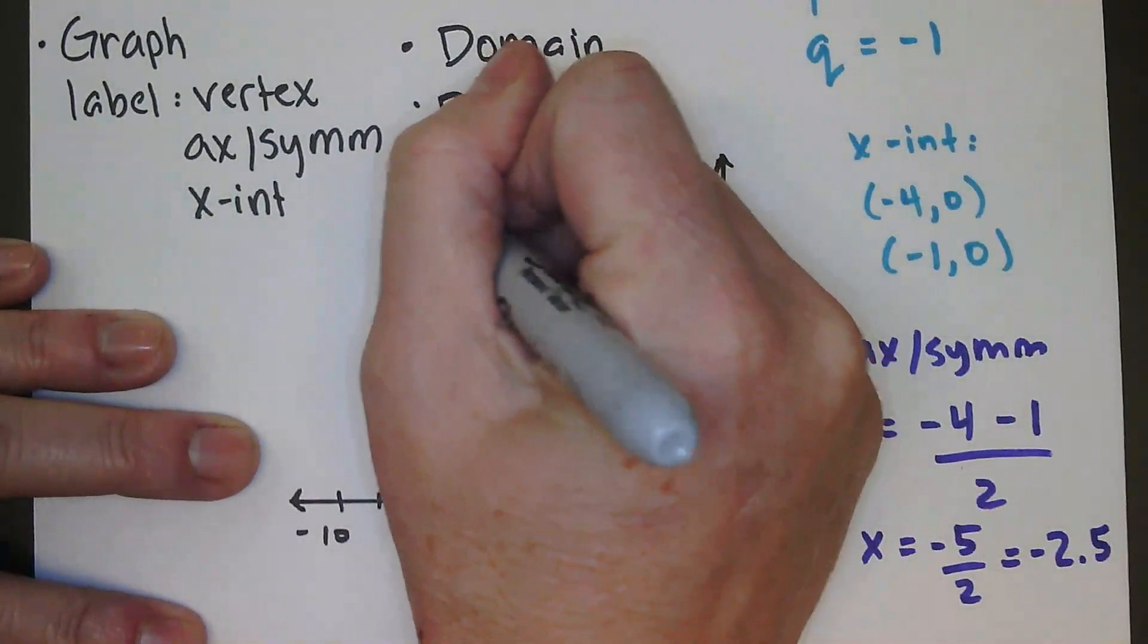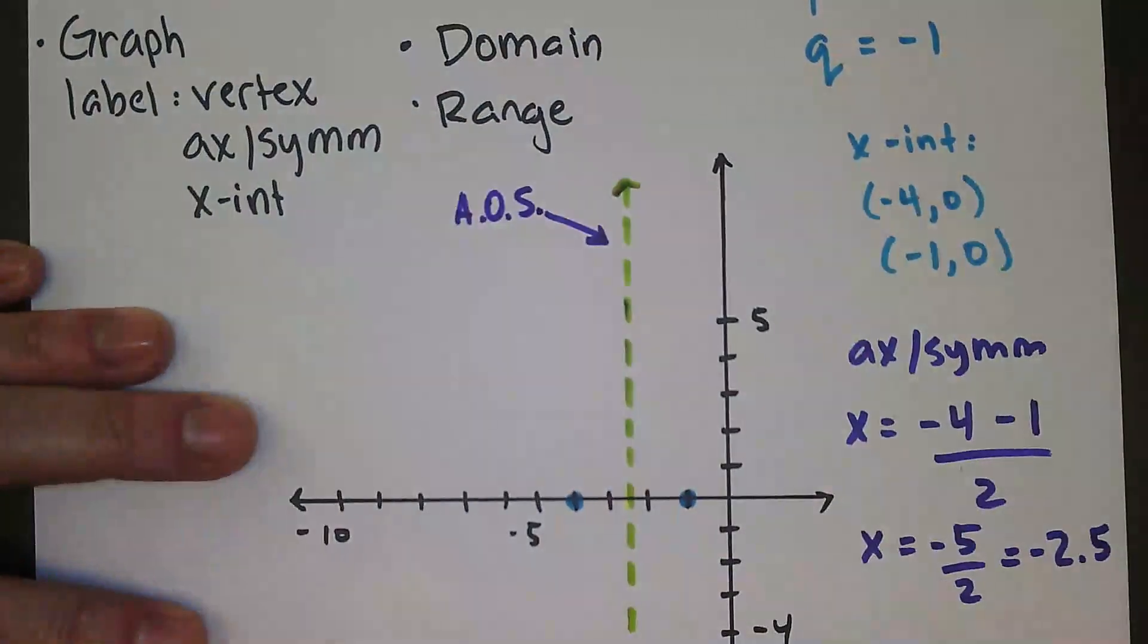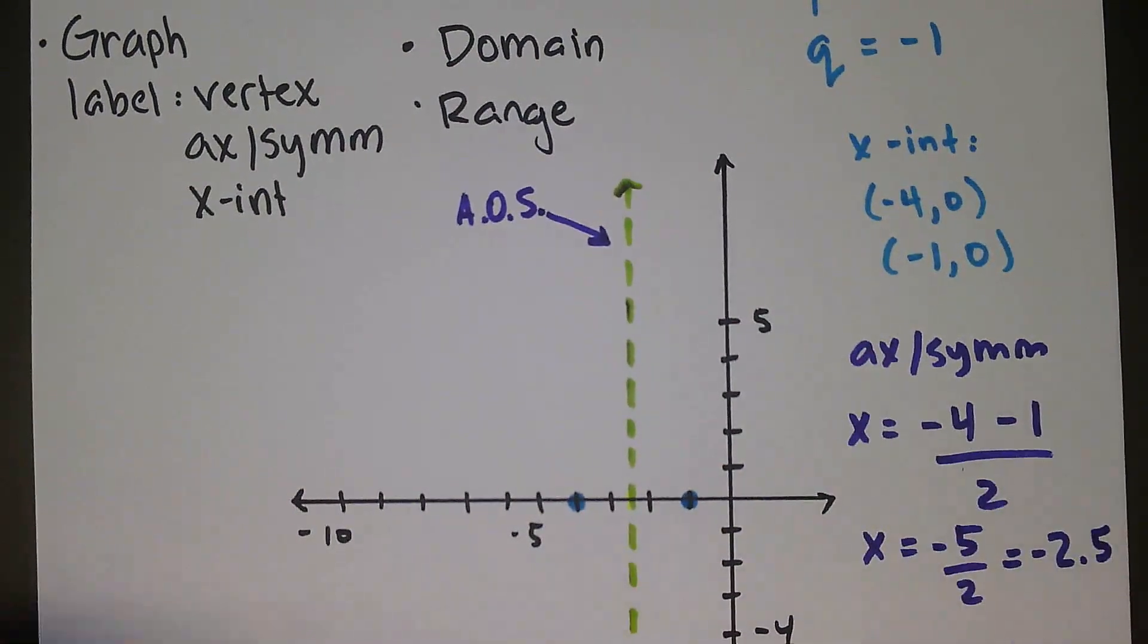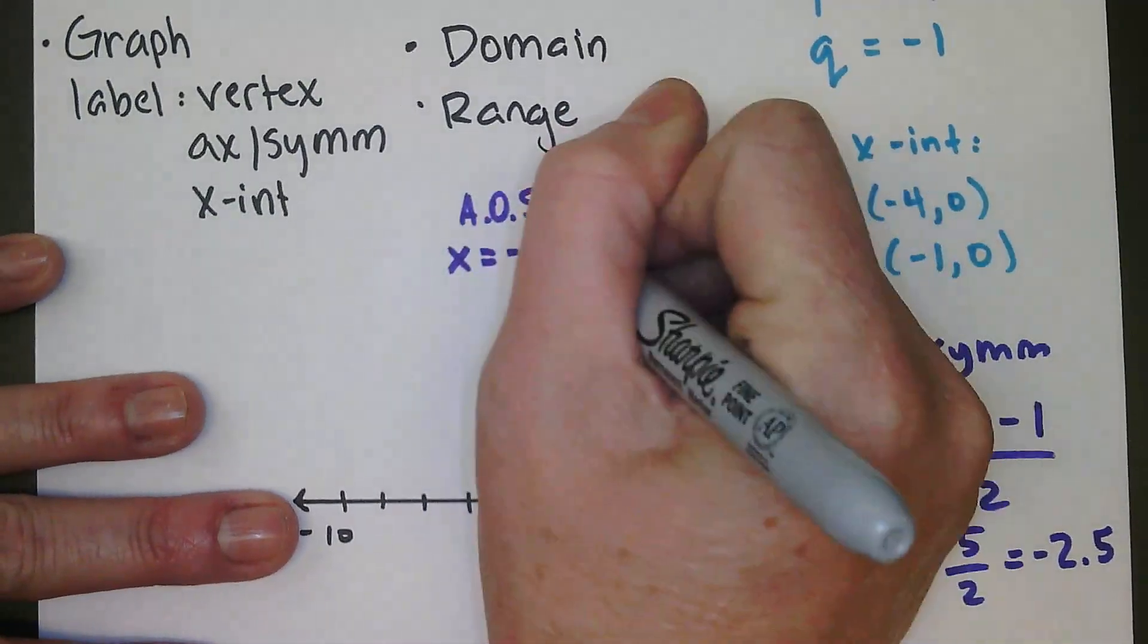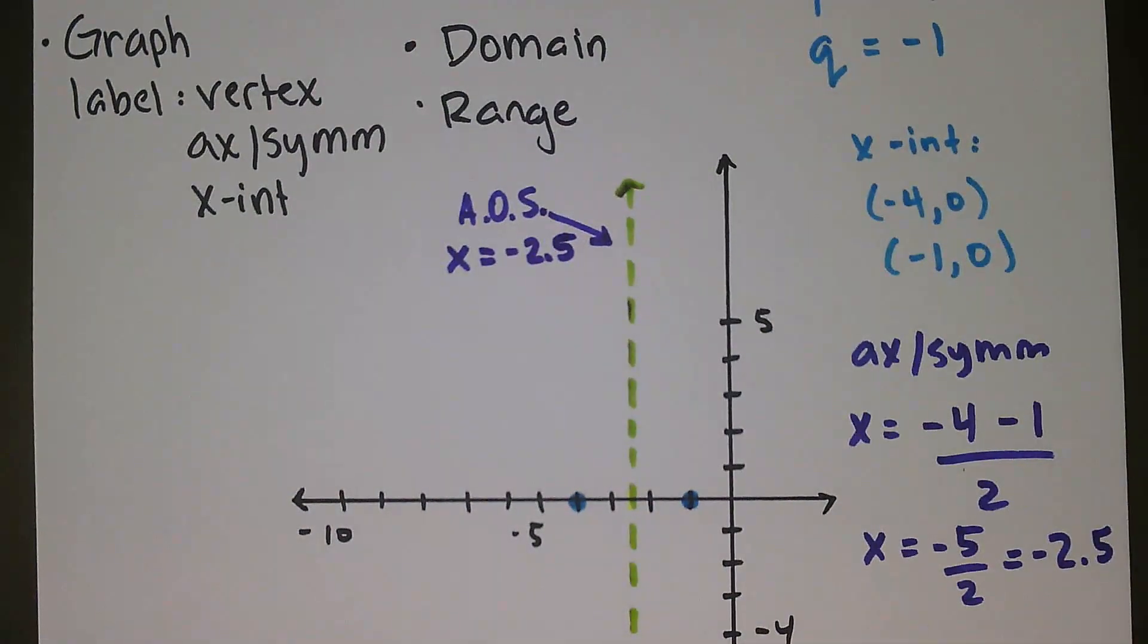So there is my axis of symmetry. And I can go ahead and label it. That is, a lot of people are labeling it AOS. I said, as well do this, axis of symmetry. But it is the equation x equals negative 2.5, vertical line going through 2.5 on x.